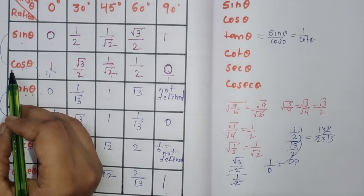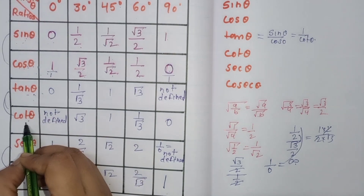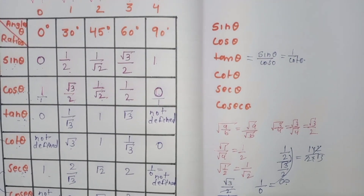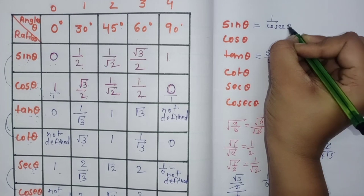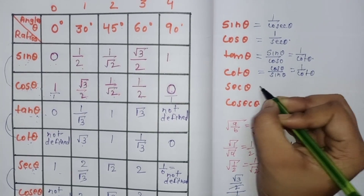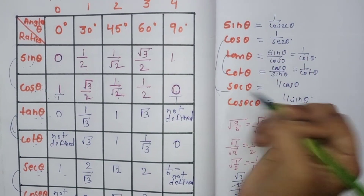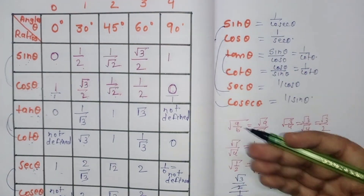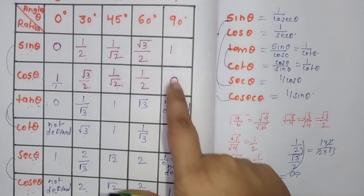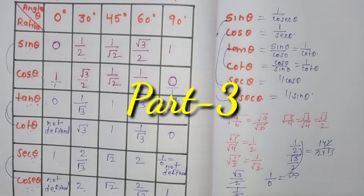To summarize: if we know sine, we get cosine by reversing; tan = sin divided by cos; cot is the reverse of tan. Sec theta = 1/cos theta, cosec theta = 1/sin theta. The key reciprocal identities are: sin = 1/cosec, cos = 1/sec, cot = cos/sin, sec = 1/cos, cosec = 1/sin. This was the trigonometric table — Part 3. It is very important for solving Exercise 8.2.